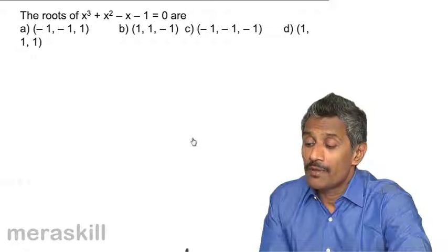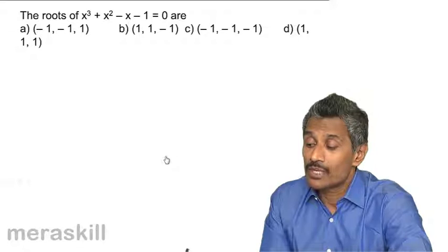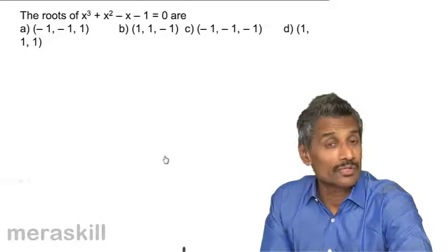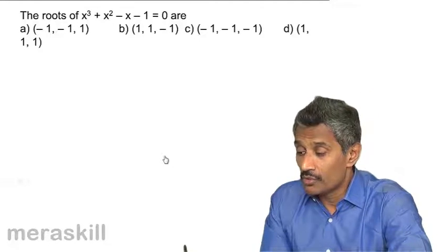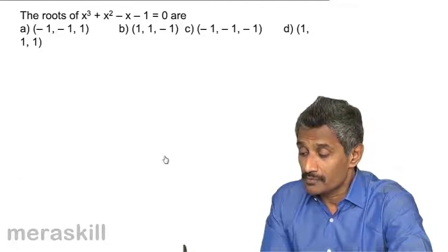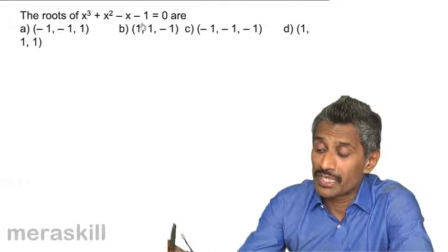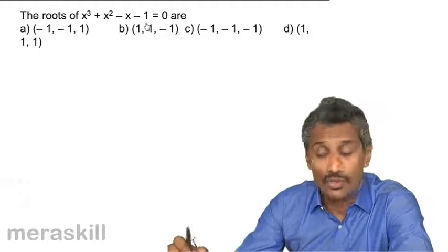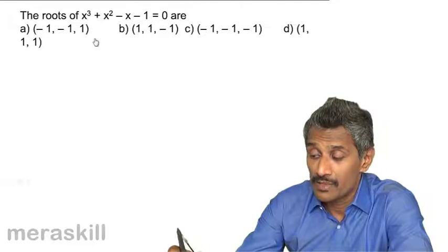The roots of x³ + x² - x - 1 = 0 are to be found. One way of doing it is substituting each of the given values, but in this case, solving the equation directly would be easier.